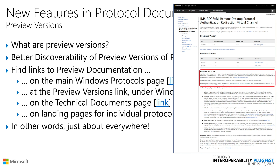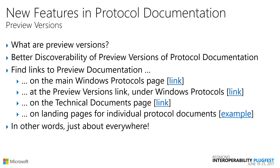Finally, we've also added preview version links to the individual landing pages for our Protocol documents. This is an example of one — one of my RDP protocols, in fact a new one. As you can see, the preview versions content appears roughly in the middle of the landing page. To sum up, we've essentially added links to preview versions just about everywhere, so there's very little excuse not to find them, and we hope you'll be taking a look at them.